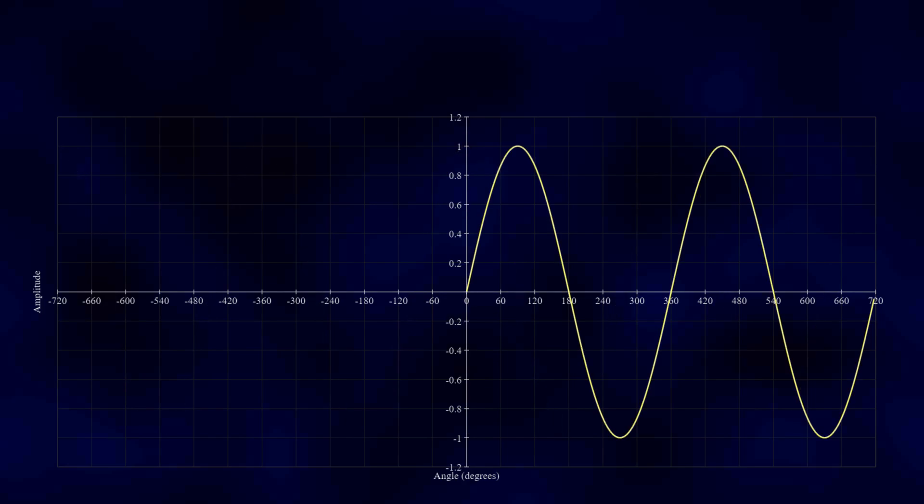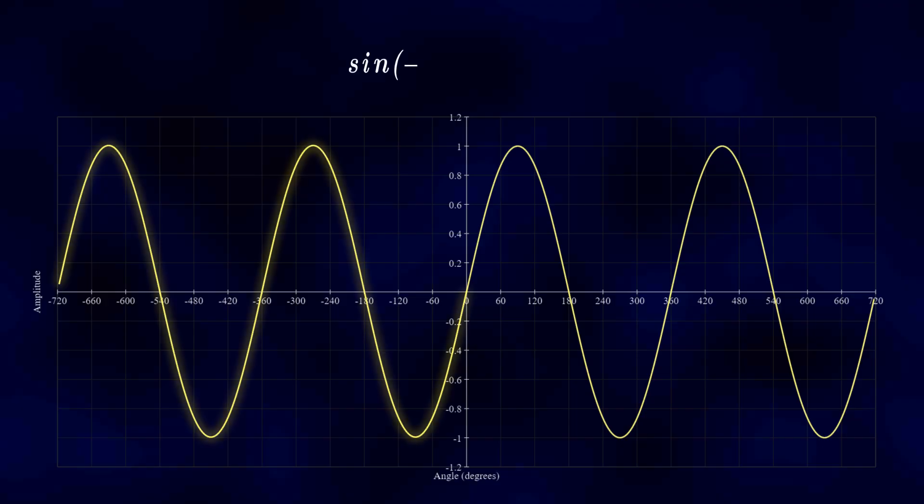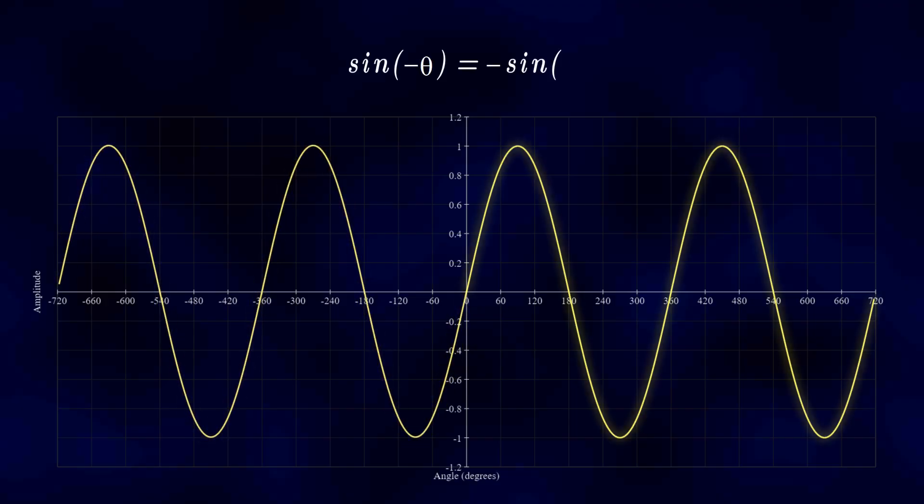Its values are anti-symmetric around the origin. To get its negative half, we need to reflect it not only in the y-axis, but in the x-axis as well. Mathematically, we would say that the sine of minus theta is equal to minus the sine of theta.